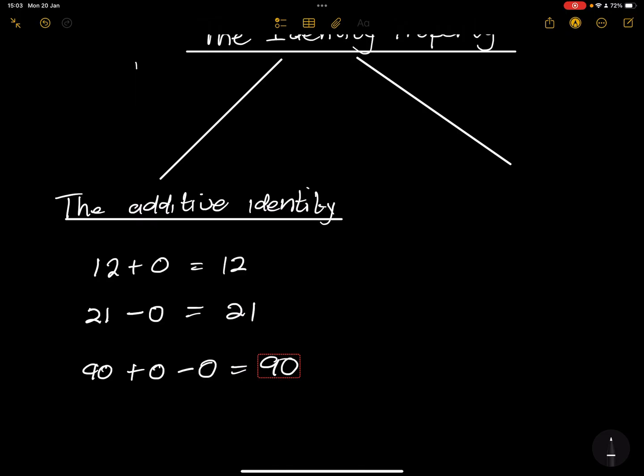If I take 90 plus 0 minus 0, that would still give us 90. So in this case, 0 is an additive identity. Now remember, in this case, whether you add it or subtract it, you still end up with the same thing. So we talked about the additive identity. Now, let's talk about the multiplicative identity.